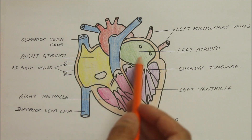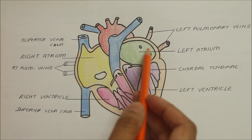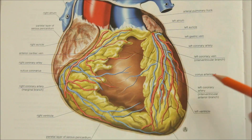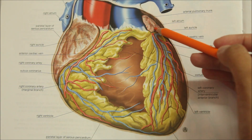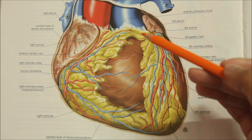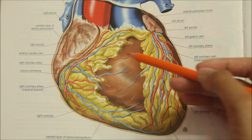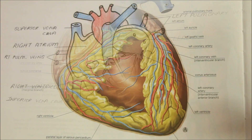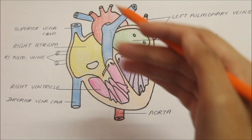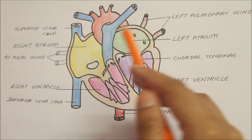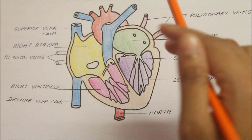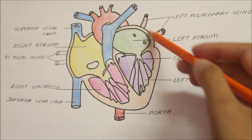Let's move on to the left atrium. The left atrium is a quadrangular chamber situated posteriorly. Its appendage, that is the left auricle, projects anteriorly to overlap the infundibulum of the right ventricle. The left atrium forms the left two-thirds of the base of the heart, the greater part of the upper border, and parts of the sternocostal surface, the left surface, and left border.